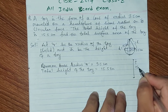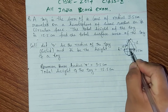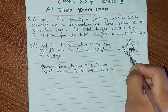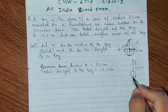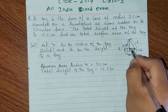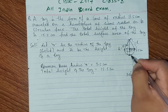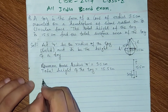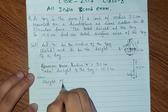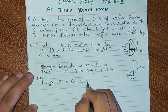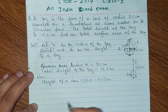The total height is 15.5 cm. The hemisphere's height equals its radius, which is 3.5 cm. So the height of the cone is equals to 15.5 minus 3.5 = 12 cm.